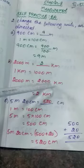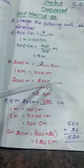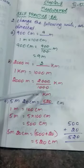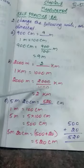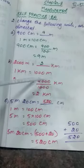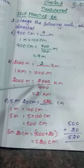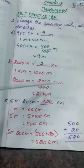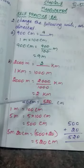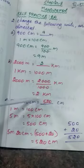Now you have to strike out the zeros. In the numerator there are 3 zeros and in the denominator also 3 zeros. So strike out these 3 zeros. The remaining is 2 divided by 1. If you divide any number by 1, the answer is the same number itself. So 2 divided by 1 is 2. Therefore 2000 meter equals 2 kilometer.